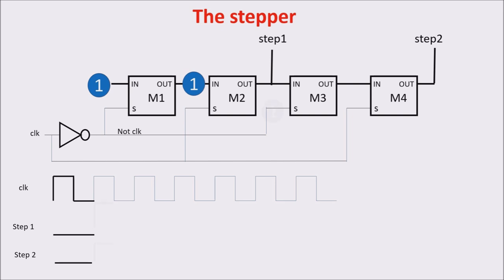When the second rise front of the clock arrives, M2 acquires the 1 in input, so step 1 goes to 1 and step 2 remains at 0, because M4 acquires a 0. When the second down front of the clock arrives, M3 acquires the 1 in input, but M4 doesn't acquire anything, so step 2 stays at 0. Step 1 remains at 1.